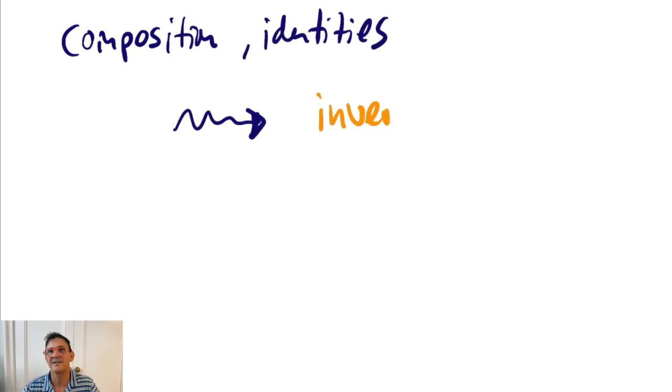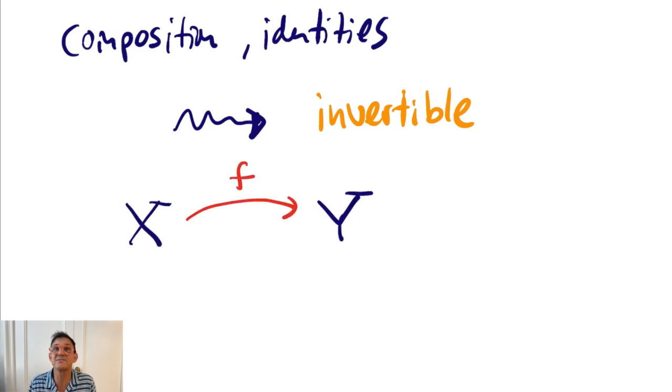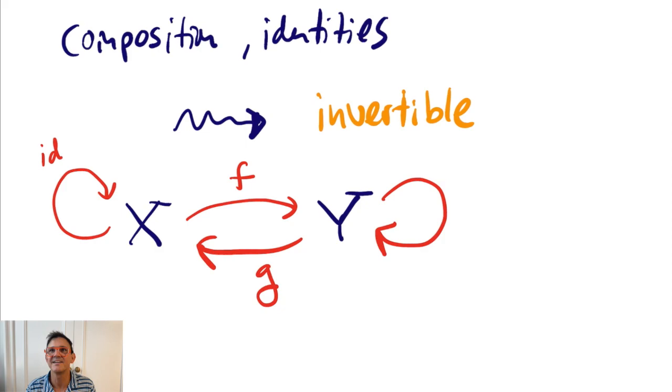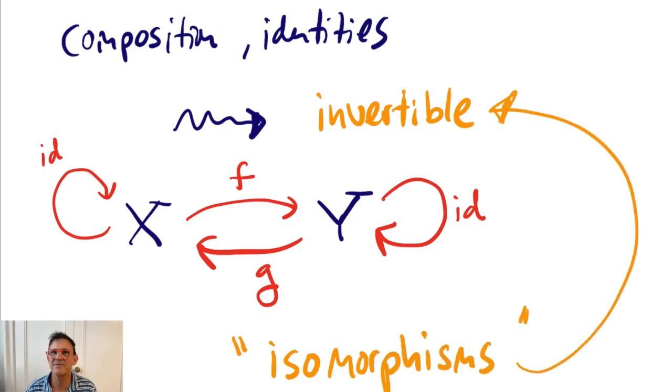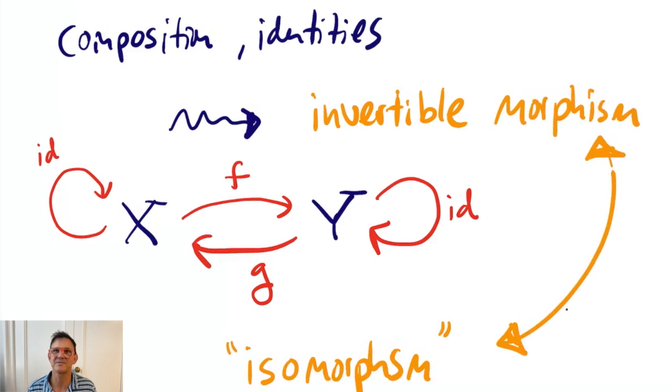So, in this case, a morphism from X to Y is invertible if there exists a morphism G from Y to X, so that the compositions G followed by F is the identity on X, and F followed by G is the identity on Y. Now, invertible morphisms get a special name. They're called isomorphisms. And this resolves an important question. When are two objects considered the same?